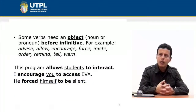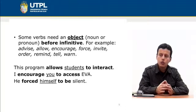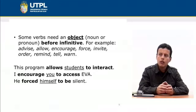Some verbs need an object — which can be a noun or pronoun — before the infinitive. We have three examples of verbs that require an object between the verb and the infinitive. For example: 'These programs allow students to interact' — you can see the object 'students' placed between the verb and the infinitive.